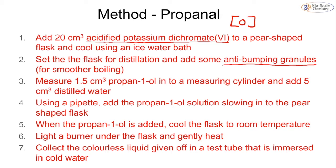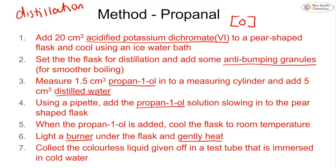We put 1.5 cm³ of our alcohol into a measuring cylinder and dilute it with 5 cm³ of distilled water. Using a pipette we slowly add the propan-1-ol into the pear-shaped flask. Once added, we cool the flask to room temperature and then light a burner underneath to gently heat. The colourless liquid given off is collected in a test tube immersed in cold water — that should be our aldehyde. Notice we're adding it slowly and not using reflux; this is distillation by addition.